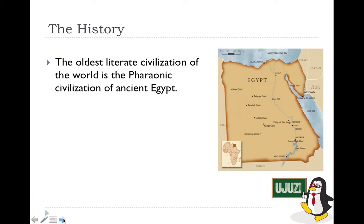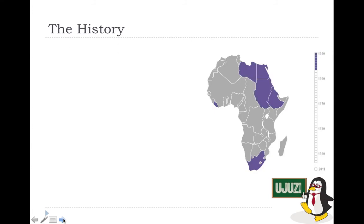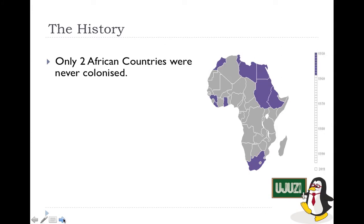Literate civilization started in ancient Egypt, which is the greatest place of early civilization. Historical records date the rise of the Egyptians to 3300 BC. Colonization is also a very significant part of African history — the map on the right shows how countries gained independence starting from 1950 onwards.